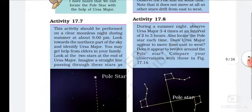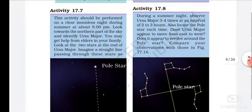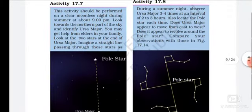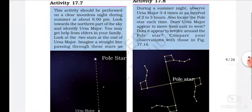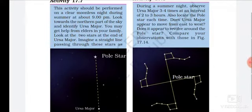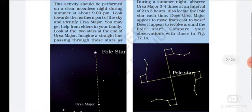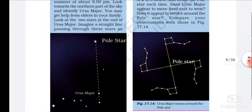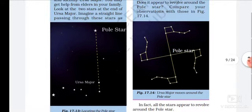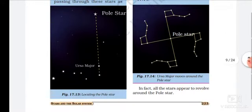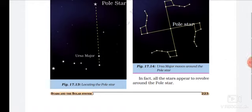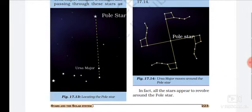यानि आपको एक्टिविटी पर्फॉर्म करनी है clear moonless night के अंदर, summer के दिनों में 9 बजे. आपके घर के elders से आपको ज्यादा help मिल जाएगी और आपको स्टार को continuous देखना है—Ursa Major और Pole Star. इसका figure दिया हुआ है.